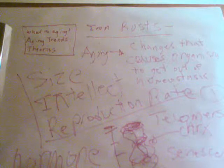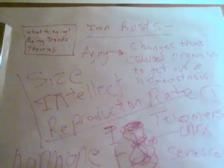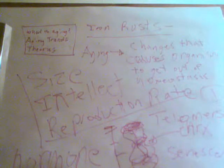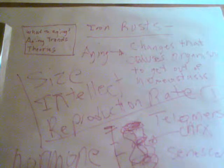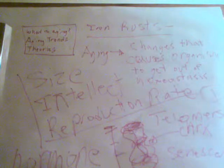Growth hormone has a huge impact on aging, especially in rats. A rat with an overexpressed growth hormone gene will live significantly shorter lives than wild-type rats because it causes premature aging. In six- to eight-month-old rats, you already start seeing diseases that you wouldn't normally see until they were a few years old. Conversely, if a rat has a growth hormone deficiency, they live a lot longer.